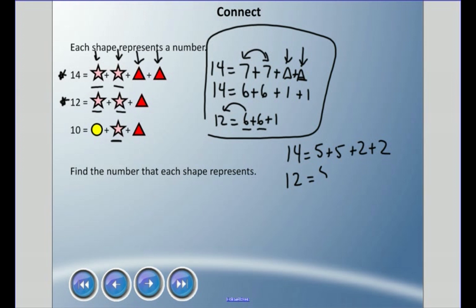And we said that maybe the triangle is a two. Well does that work? 5 + 5 is 10 + 2 is 12. So hey, I think we got it. It's worked for two, so now let's move to the 10. We have a circle, we haven't really puzzled that out yet.